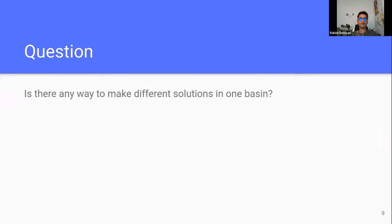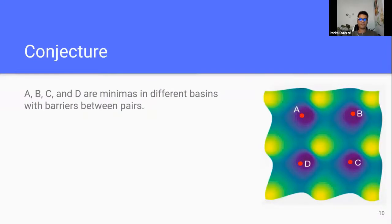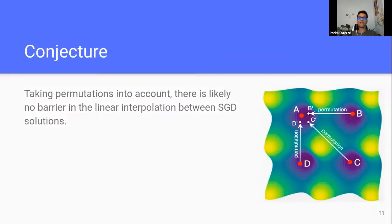Our research question was: is there any way to satisfy both requirements simultaneously — to have functionally diverse solutions which also reside in one basin? We had a conjecture. Assume we have four already-converged models A, B, C, and D. Jonathan showed that between each pair there is a barrier. Our conjecture says such barriers could vanish by considering permutations — that there exist permutations such that applying one to B yields B', where B' and A reside in one basin, and similarly for C' and D'. Then we have four models in one basin that are functionally diverse because they started from different initializations.